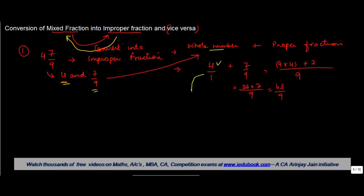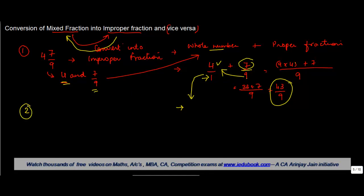Alternatively, there is a simpler approach: you can multiply the denominator by the whole number, add the numerator, and divide it by the denominator. Whenever there is no denominator for the whole number, just multiply the denominator with the whole number, add the numerator, and divide by the denominator to get the improper fraction.